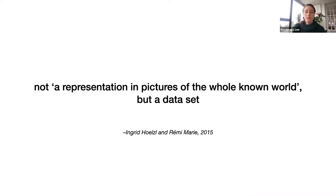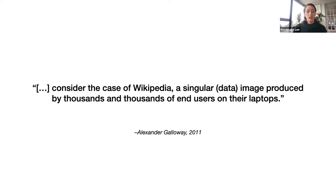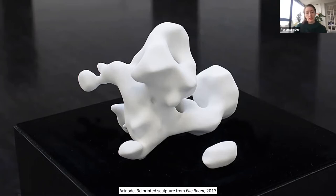What I find most significant about this instance is the notion of the image not as a representation in pictures, but as a data set. As Alexander Galloway points out, a single networked — or, as he calls it, data image — may be produced by thousands of end users on their laptops, giving the image the seemingly paradoxical capacity to be visualized by innumerable users dispersed in time and space. In digital media, we can think of this in terms of the relation between the digital image and the code for its execution. A JPEG or PDF file, for example, is an image whether or not it's visualized on a screen. This artwork offers an interesting instance of how an image may be translated between various file formats, even taking the form of three dimensions and being printed as an object.